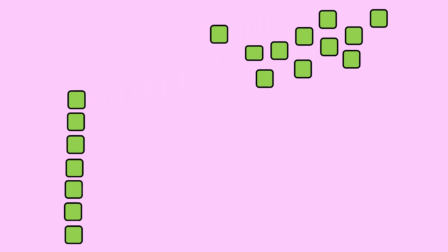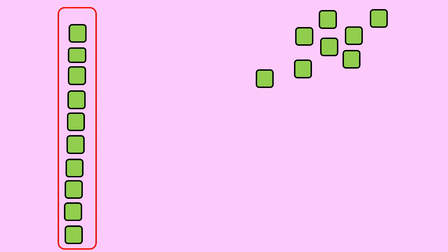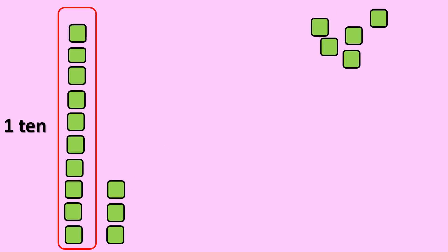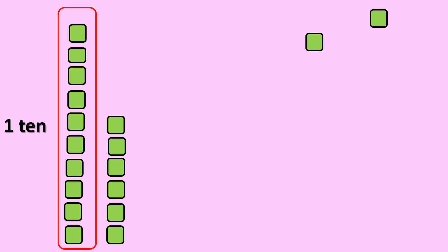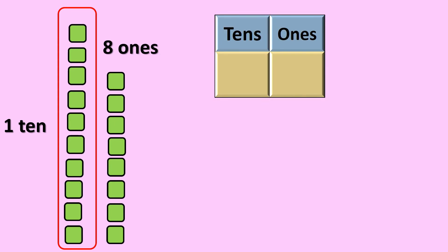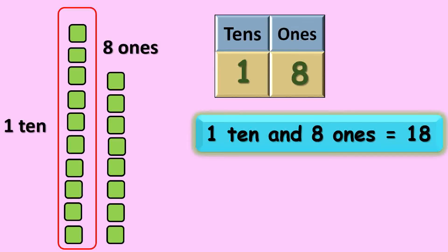1 2 3 4 5 6 7 8 9 10. So children, 10 ones gives us 1 ten. There are 1 2 3 4 5 6 7 8 — 8 ones. So 1 ten and 8 ones gives you 18.